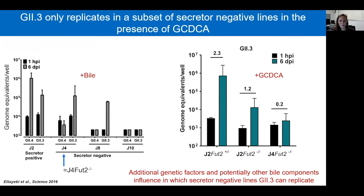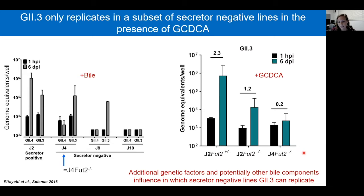You might have noticed that in the first figure the J4 FUT2-negative line was infected by GII.3, but it wasn't infected by GII.3 in the presence of just bile acid alone. So we went back and tested this again out to six days post infection. We only get GII.3 infection with GCDCA in the J2 FUT2-knockout but not the J4 secretor-negative line, showing there are additional genetic factors and potentially other components in bile that might influence which secretor-negative lines GII.3 can replicate in.